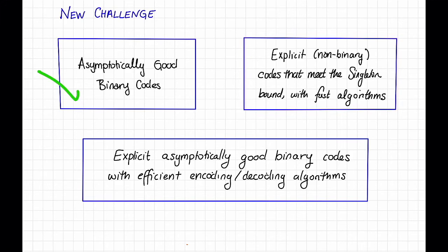We also achieved the goal of coming up with explicit codes, maybe not binary codes, that meet the singleton bound, that is, have the optimal tradeoff between rate and distance, and have fast algorithms. These are Reed-Solomon codes.